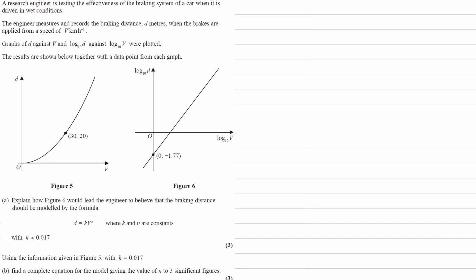All right, so we're told a research engineer is testing the effectiveness of the braking system of a car when it is driven in wet conditions. The engineer measures and records the braking distance d meters when the brakes are applied from a speed of v kilometers per hour. Graphs of d against v and log d against log v are plotted, so we see that in Figure 5 and Figure 6.